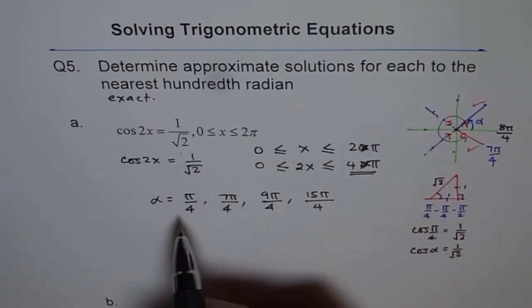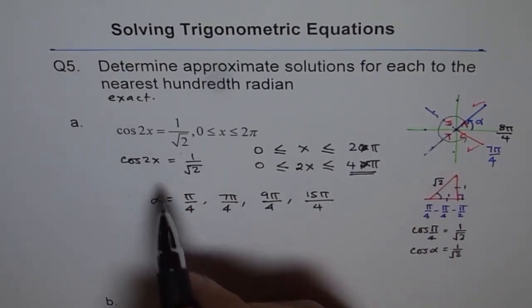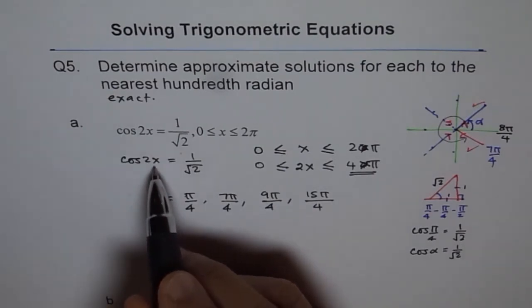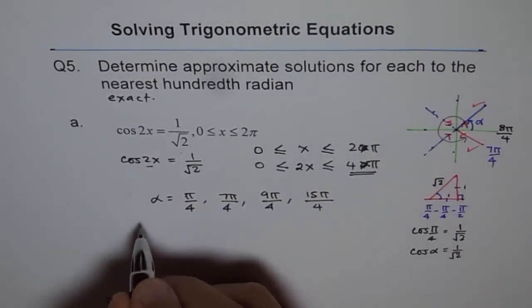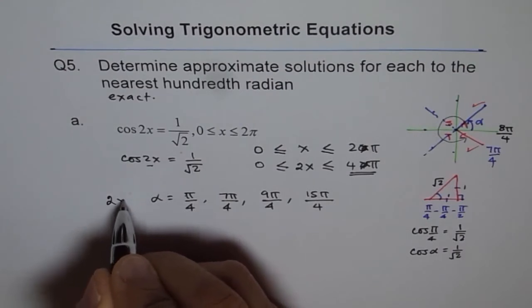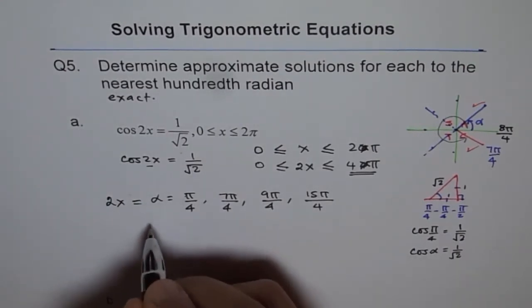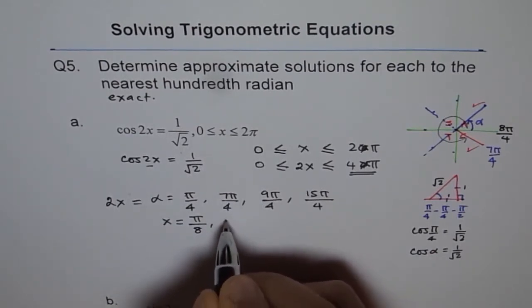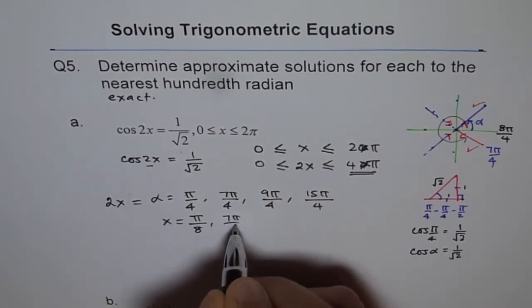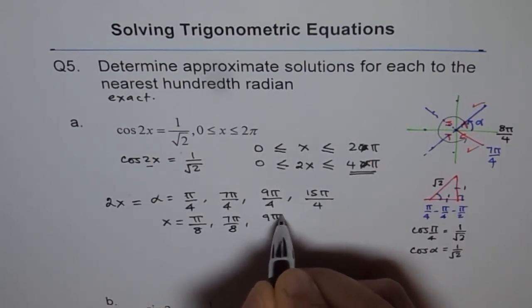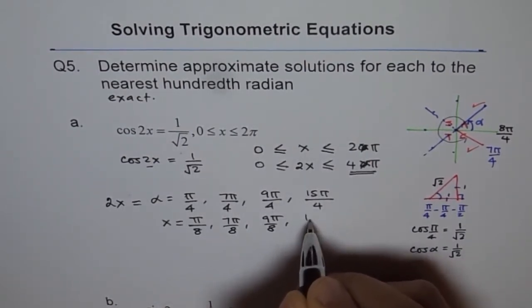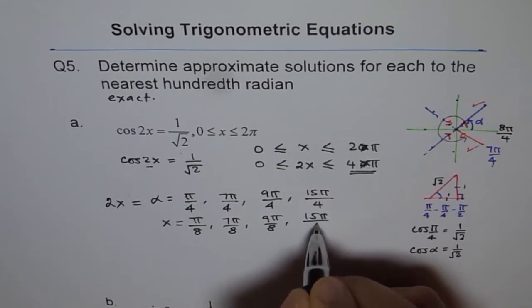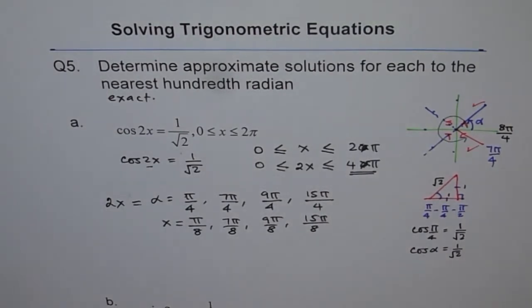But strictly speaking, these are not the x values. These are the 2x values, right? These are the 2x values. Therefore, I have 2x is equals to this, all of this. So what is x equals to? x is half of this, correct? So my answer is π by 8, 7 π by 8, 9 π by 8, and 15 π by 8. So that is how I get my solution, correct?